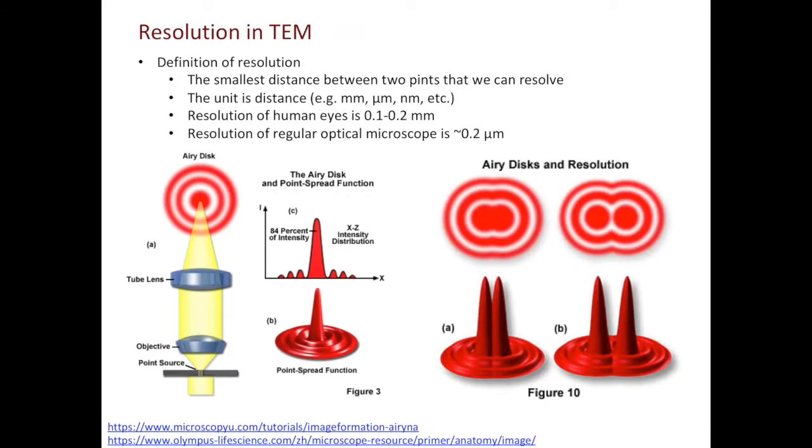After talking about why using electrons in TEM, let's talk about the resolution of TEM. The definition for resolution, regardless of the microscope you use, is defined as the smallest distance between two points that can be resolved. Therefore, the unit for resolution is distance, such as millimeters, microns, or nanometers. The resolution of the human eyes usually is 0.1 to 0.2 millimeters. The resolution for a regular optical microscope is about 200 nanometers. The resolution of TEM can be down to sub-nanometers easily.